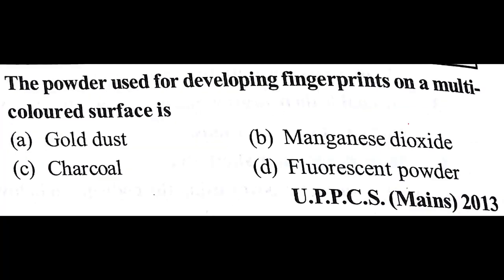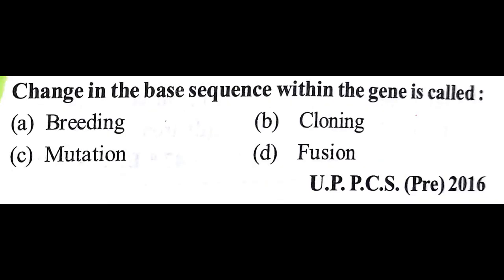The powder used for developing fingerprints on a multi-colored surface — the answer is D: fluorescent powder. This is a newly developed technique by which we can trace fingerprints even on plastic bags. Change in the base sequence within a gene is called mutation — the answer is C: gene mutation.